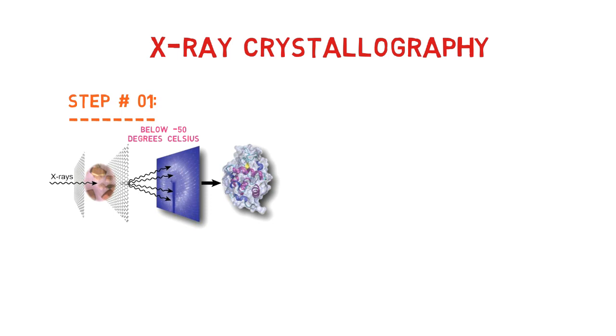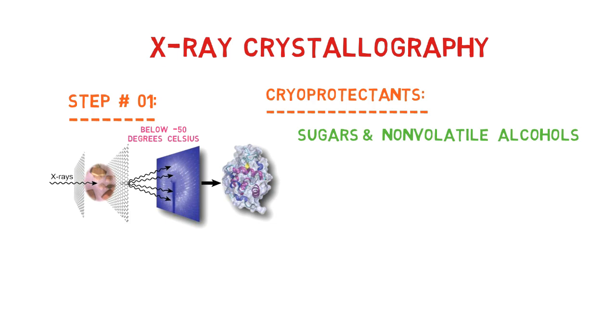Compounds used in protein crystal stabilization are useful for RNA crystals as well. These include sugars and non-volatile alcohols, such as glucose, glycerol, 2-methyl-2,4-pentanediol, and low molecular weight polyethylene glycols.